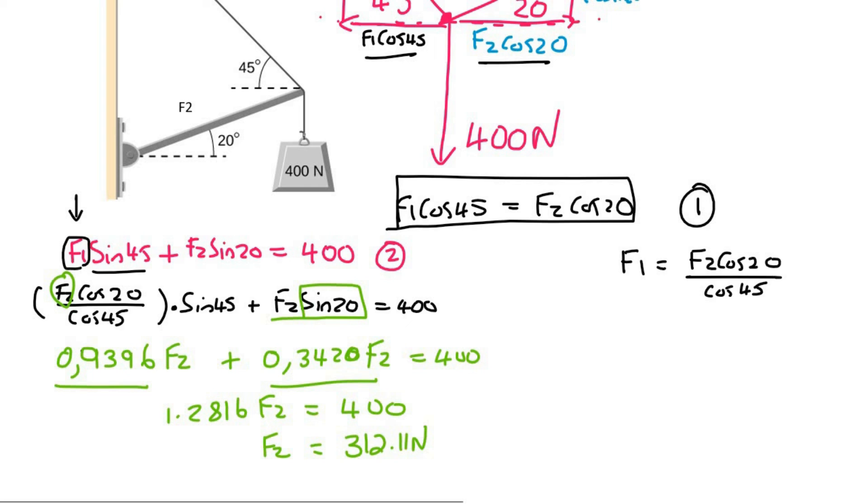Now all I do is I plug that answer for F2 into here to get F1. Makes sense, right? So we say F1 is going to be equal to 312.11 multiplied by cos 20 over cos 45. Go ahead, type that in, and so that's going to give us 414.77 newtons for F1.